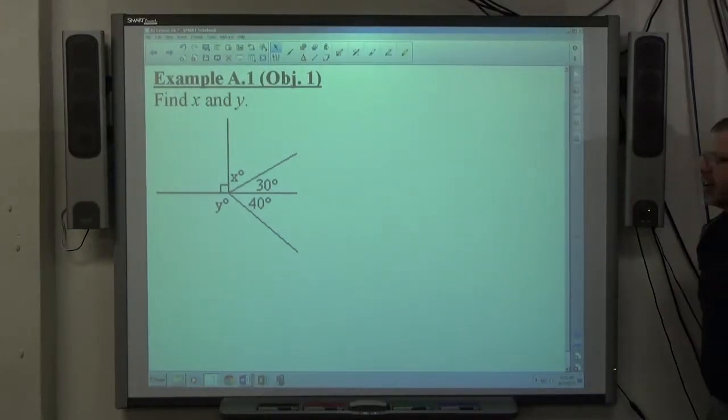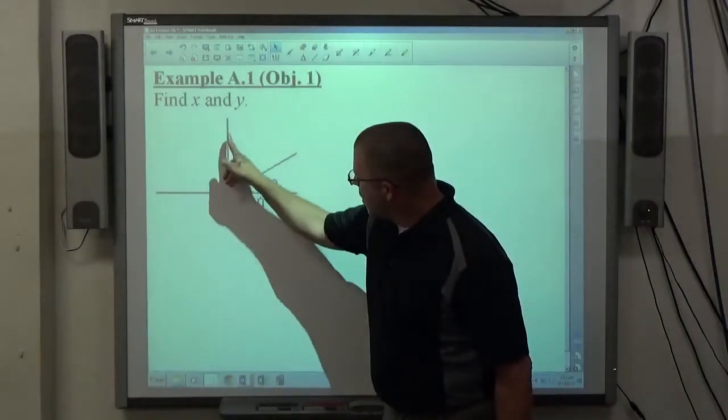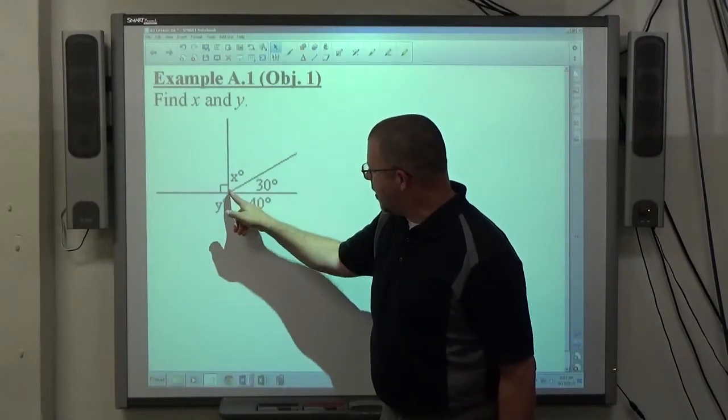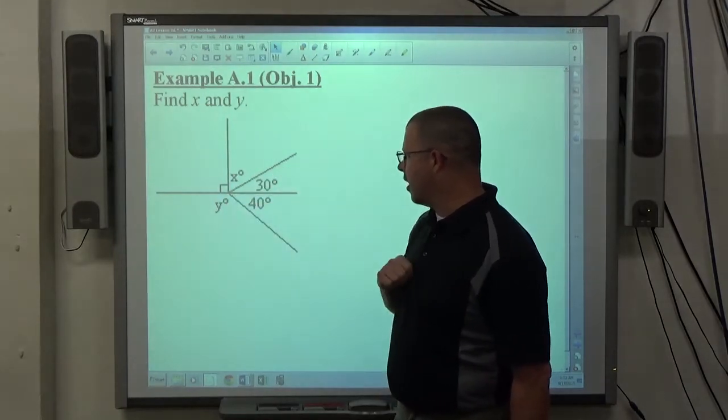Alright, find x and y. What we have here is a line that has a perpendicular segment going straight up, and then this going off looks about a 30 degree angle above, not a 40 degree angle below.